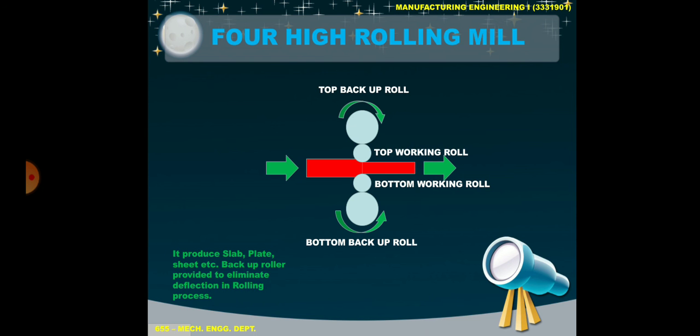A 4-high rolling mill produces slab, plate, sheet, etc. Backup rollers are provided to eliminate deflection in the rolling process. Since the top and bottom working rollers are small in shape, there is a chance of deflection in the workpiece, so backup rollers are provided at the top and bottom.